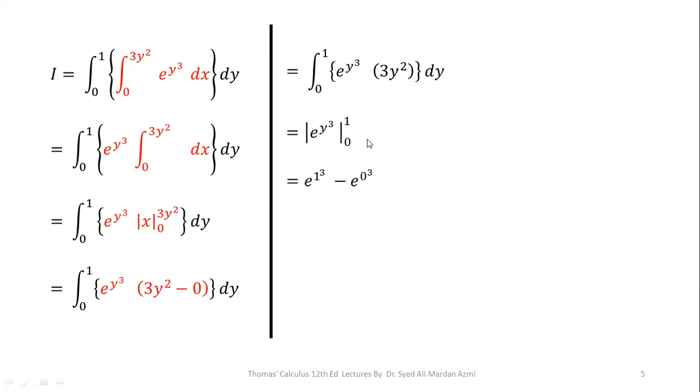Limit from 0 to 1. In the next step, we will apply the limits, upper limit minus lower limit. We have replaced y with 1 minus y with 0. Now, this gives us e minus 1, which concludes this question.